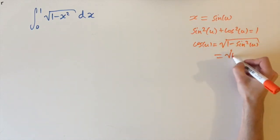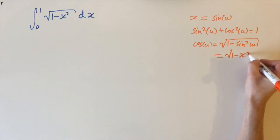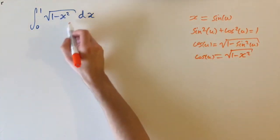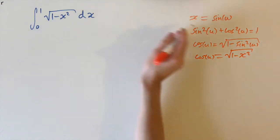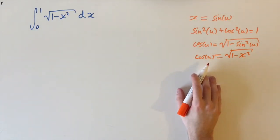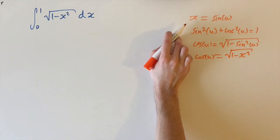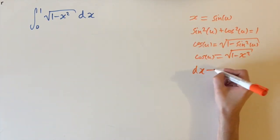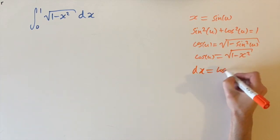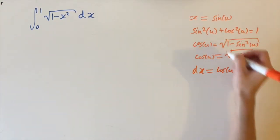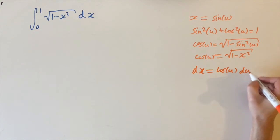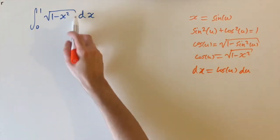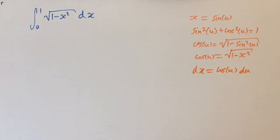We can see why we made this substitution: replacing sine of u with x gives cosine u equals the square root of 1 minus x squared, which is exactly the integrand. So using the substitution simplifies the square root to cosine u. We also need dx: differentiating x equals sine u gives dx equals cosine u du. So we replace dx with cosine u du and the square root with cosine u.